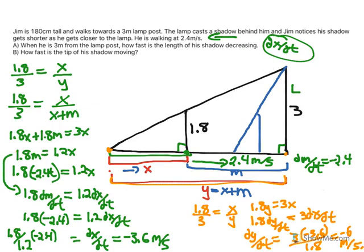So the whole bottom length is decreasing at 6, which makes sense. In fact, we could have just added those values, right? We found that dx by dt was changing at negative 3.6 meters per second, and we knew that m was changing at 2.4 meters per second. The two of those added together just gives you your negative 6 meters per second. But we showed it with the calculus, which is nice.